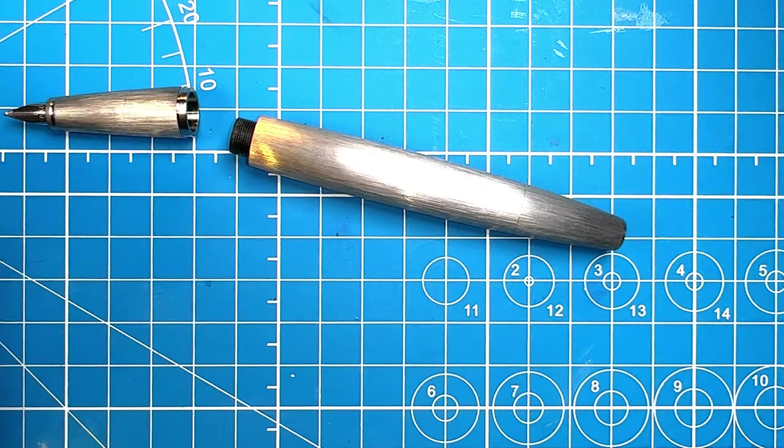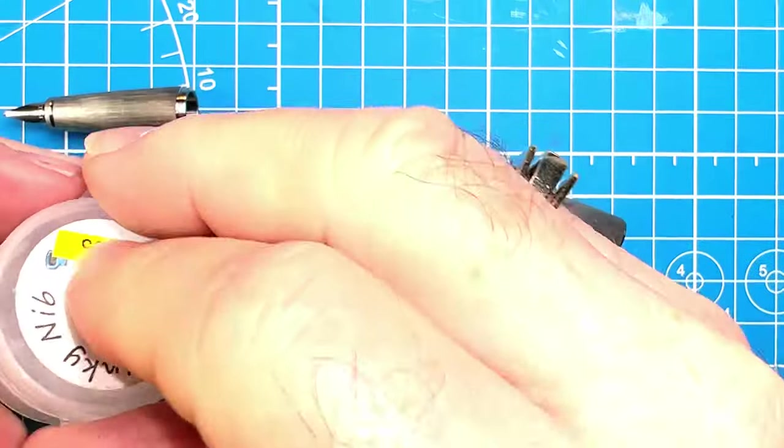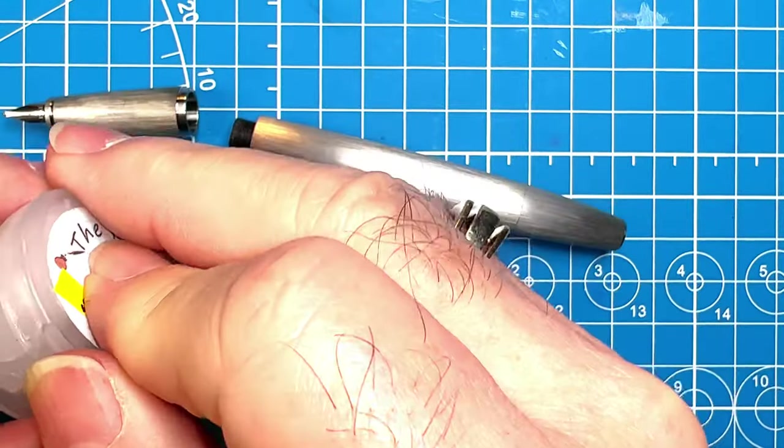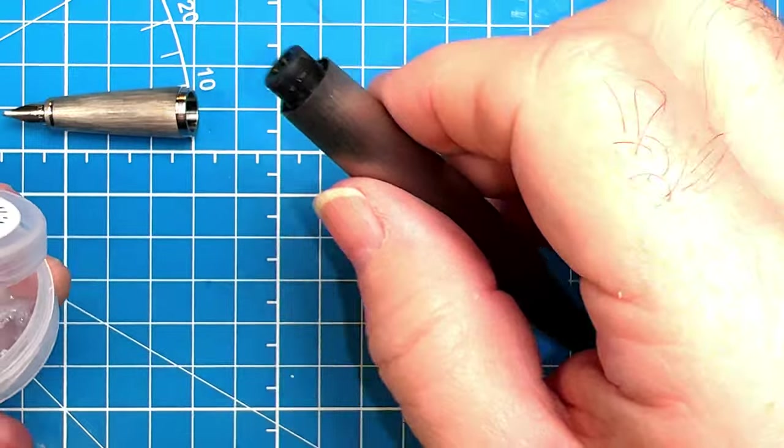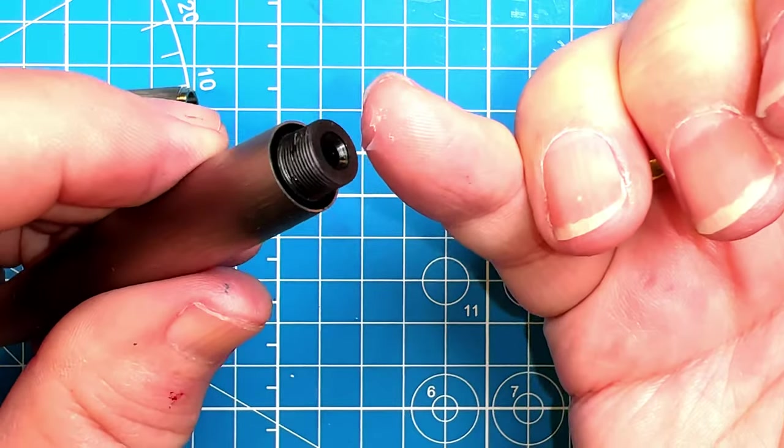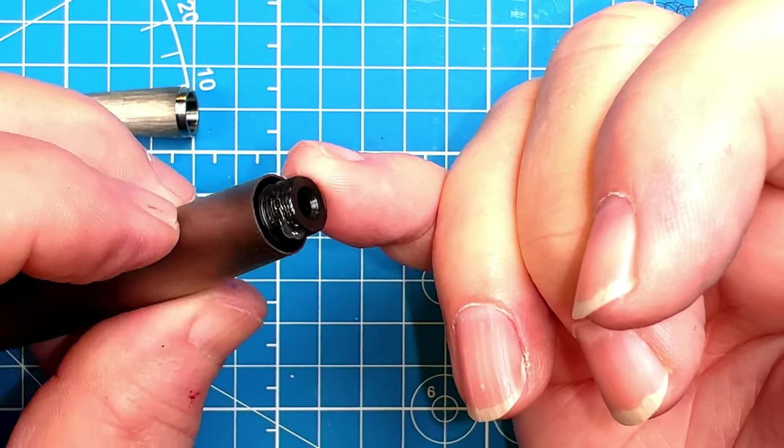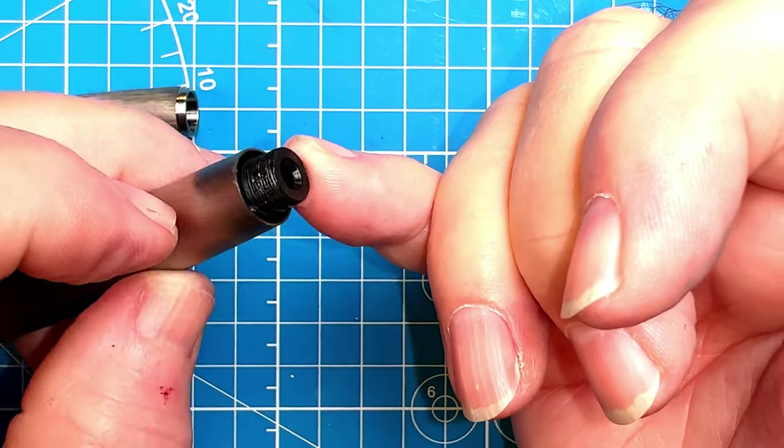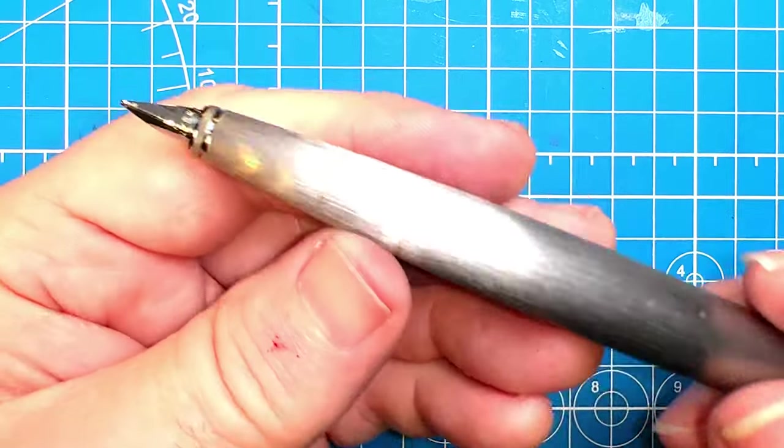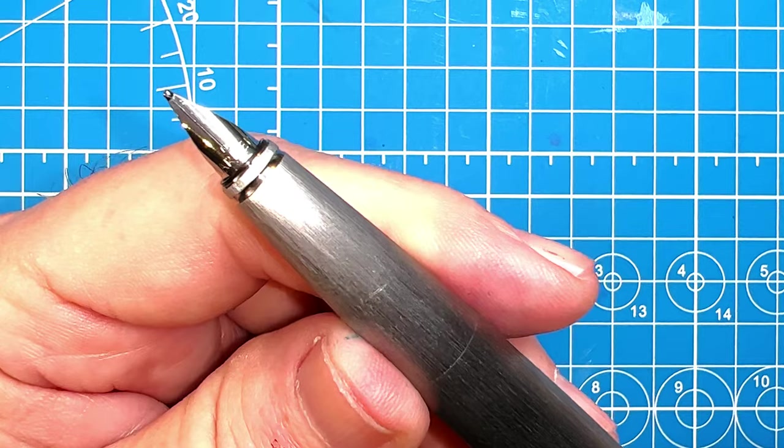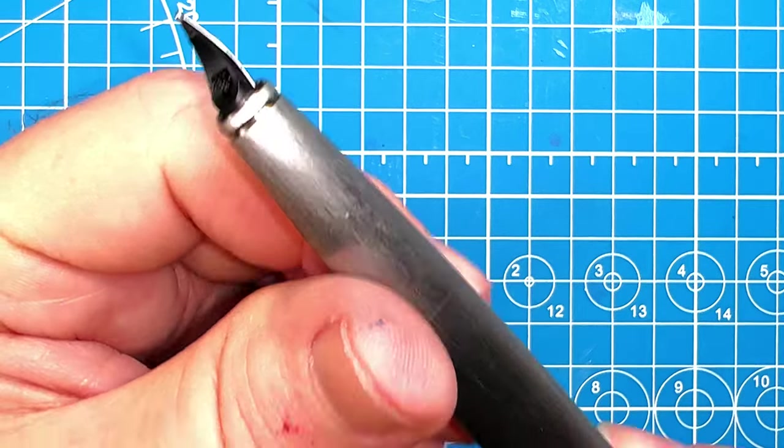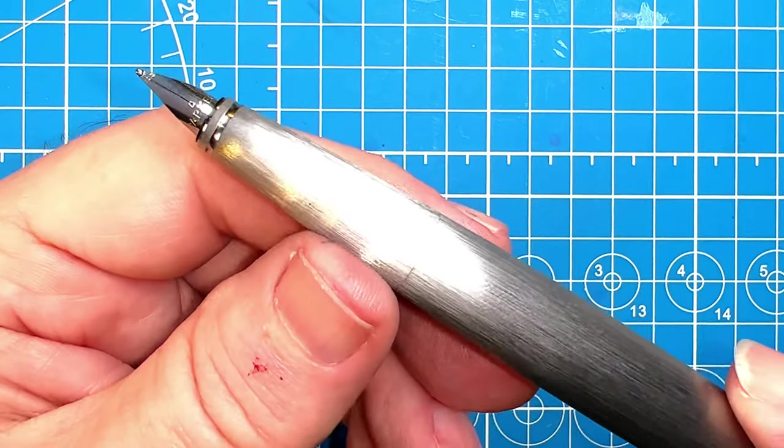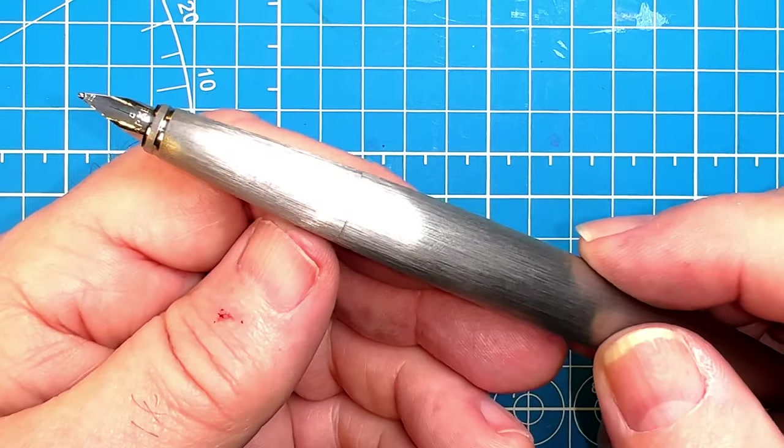Now we can put the section back on, but just to make sure I'm going to put a little silicone grease on those threads on the section. Just a little dab will do you because I don't want this leaking and I don't want to have to go into it again. There, now that's as tight as it will go. And there's my Parker medium nib in my Moonman Ti-500. Now let's ink it up and see if it works.